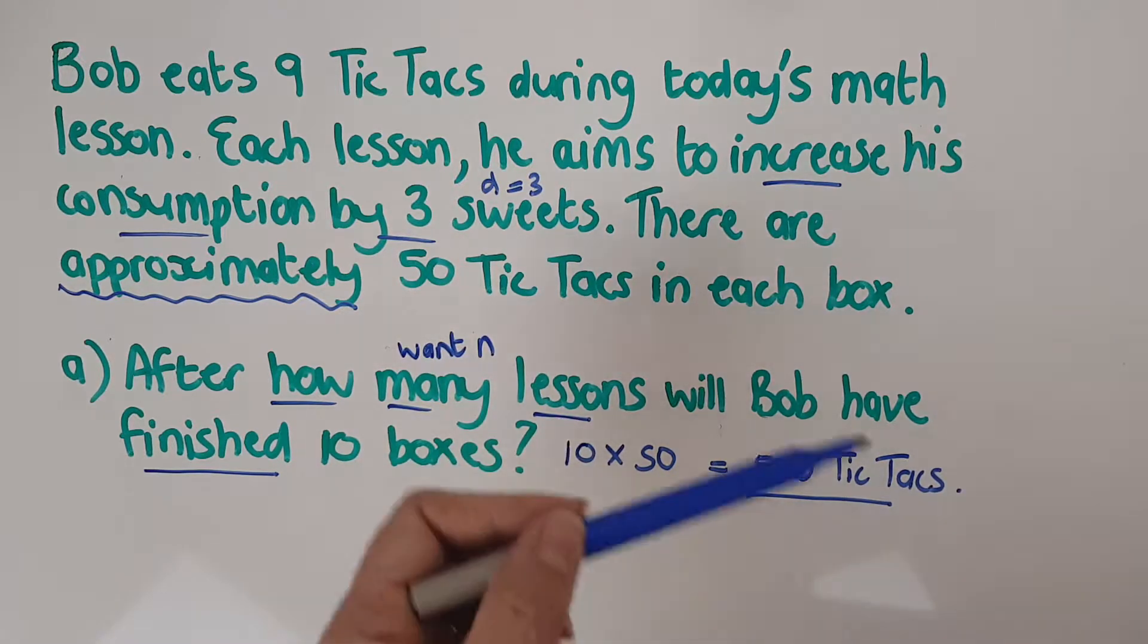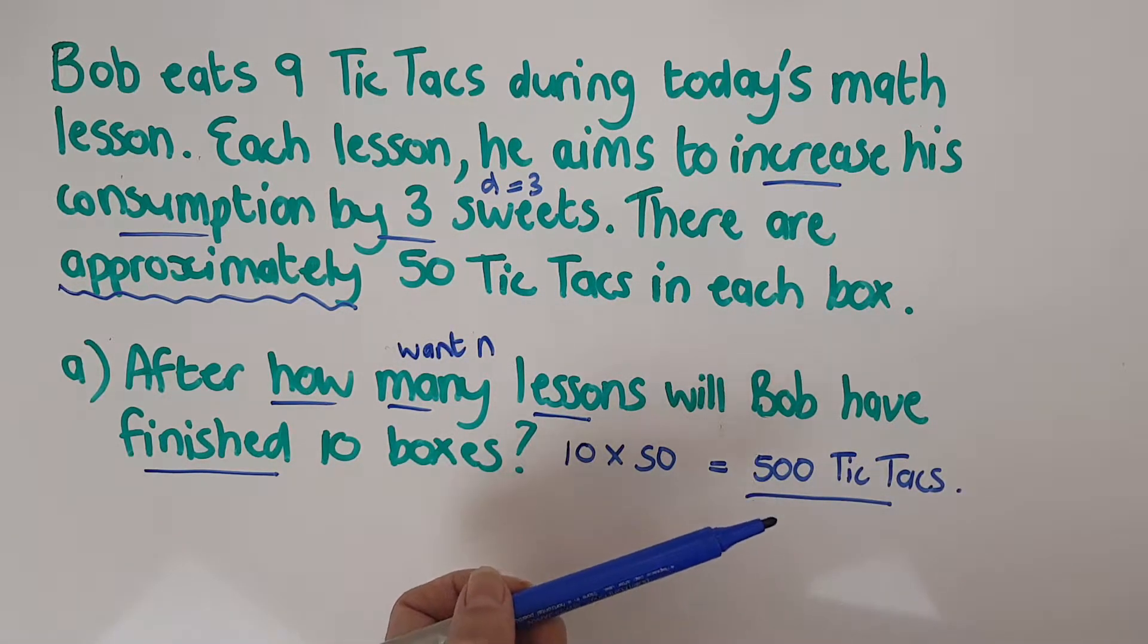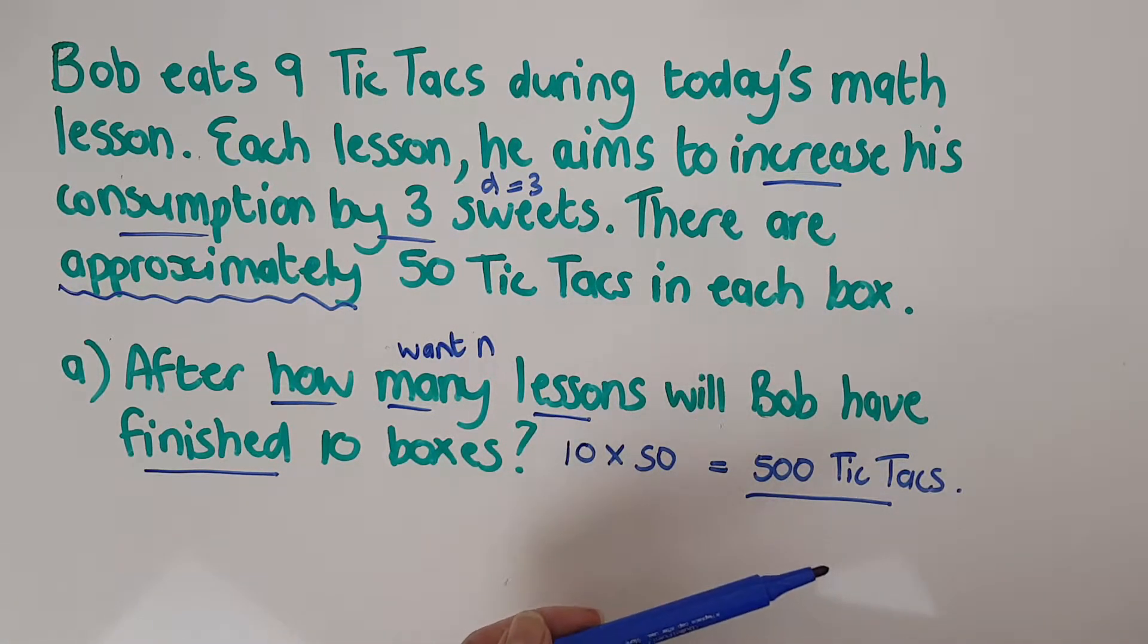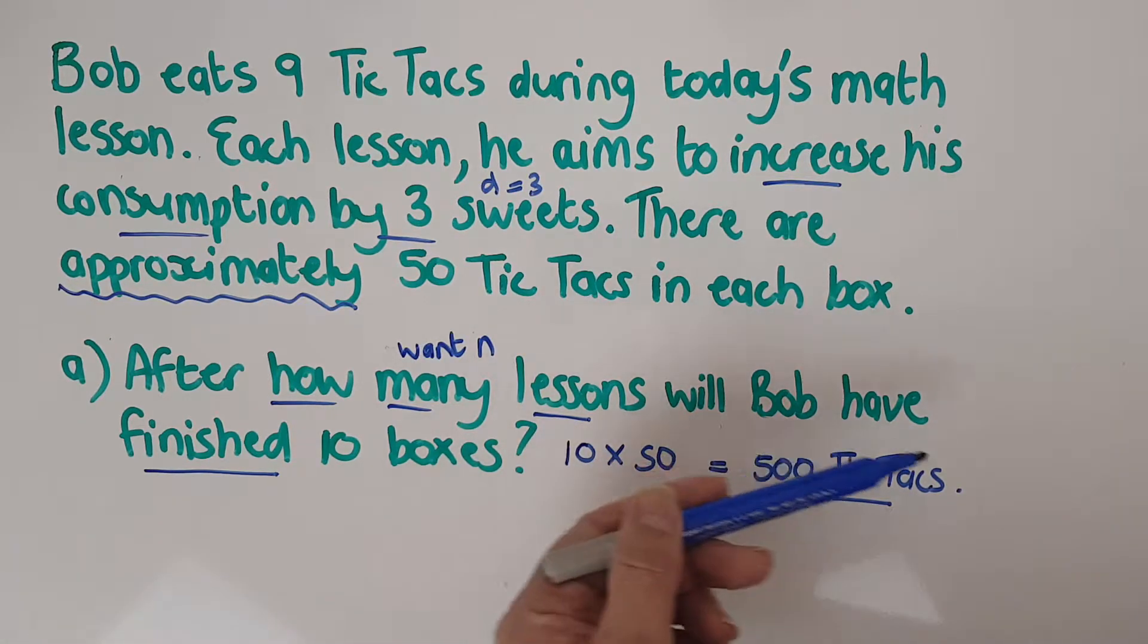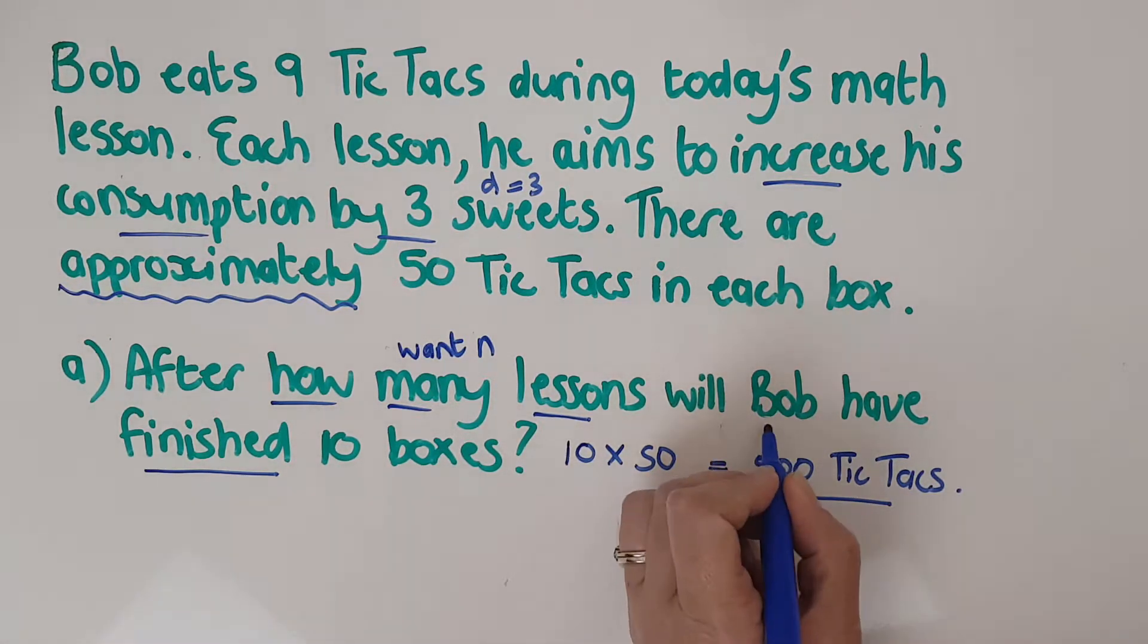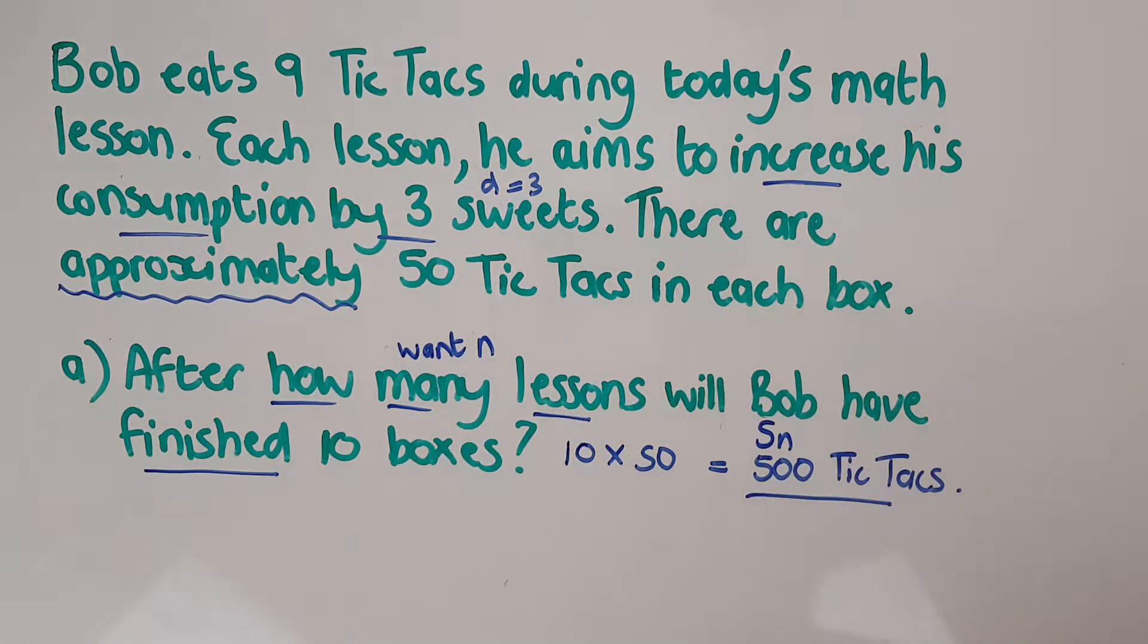Is this five hundred that they give me the ones he's eaten up to that point, or the tn? Think it through. Will Bob have finished? When will he have gotten through? When will everything that he's eaten add up to five hundred? So that's Sn. They're giving you Sn. They want n.